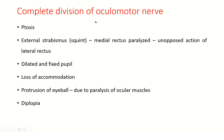When the oculomotor nerve is damaged, it results in: ptosis, due to paralysis of the levator palpebrae superioris; external strabismus or squint, because the medial rectus is paralyzed and there is unopposed action of the lateral rectus; a dilated and fixed pupil, because the sphincter pupillae is lost; loss of accommodation, because the ciliaris muscle is also paralyzed; protrusion of the eyeball due to paralysis of the ocular muscles; and diplopia.